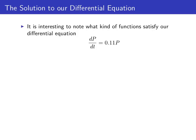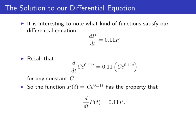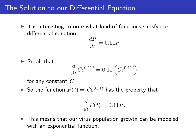That gives us a differential equation dp/dt = 0.11p that represents the growth of our virus population. Now it's worthwhile to think about what kind of functions satisfy dp/dt = 0.11p. Recall that the chain rule tells us that if we differentiate a constant times e to the 0.11t, we get 0.11 times that constant times e to the 0.11t, and this works for any constant c. So the function p(t) = c · e^(0.11t) has the property that its derivative is just 0.11 times p. All of this tells us that our virus population can be modeled with an exponential function of that form — all we need to do is figure out the value of that constant c.